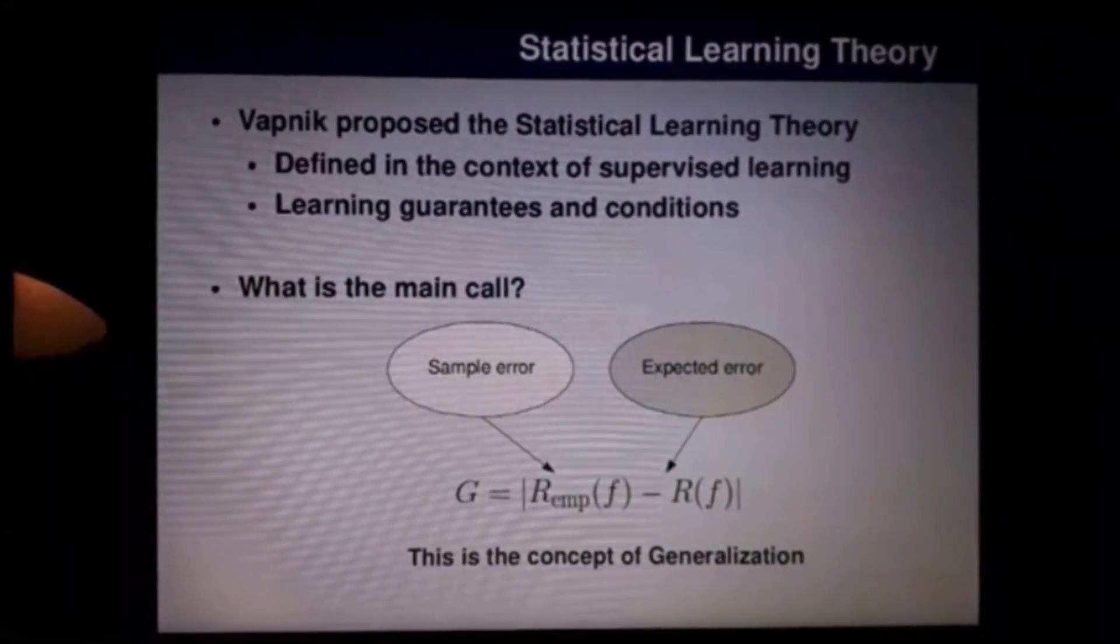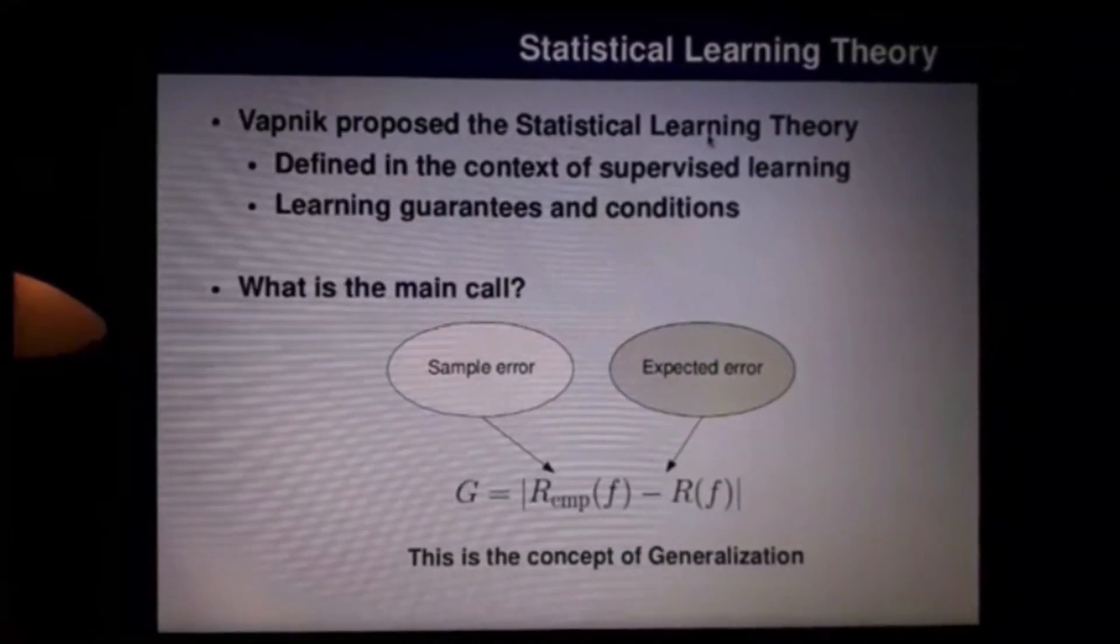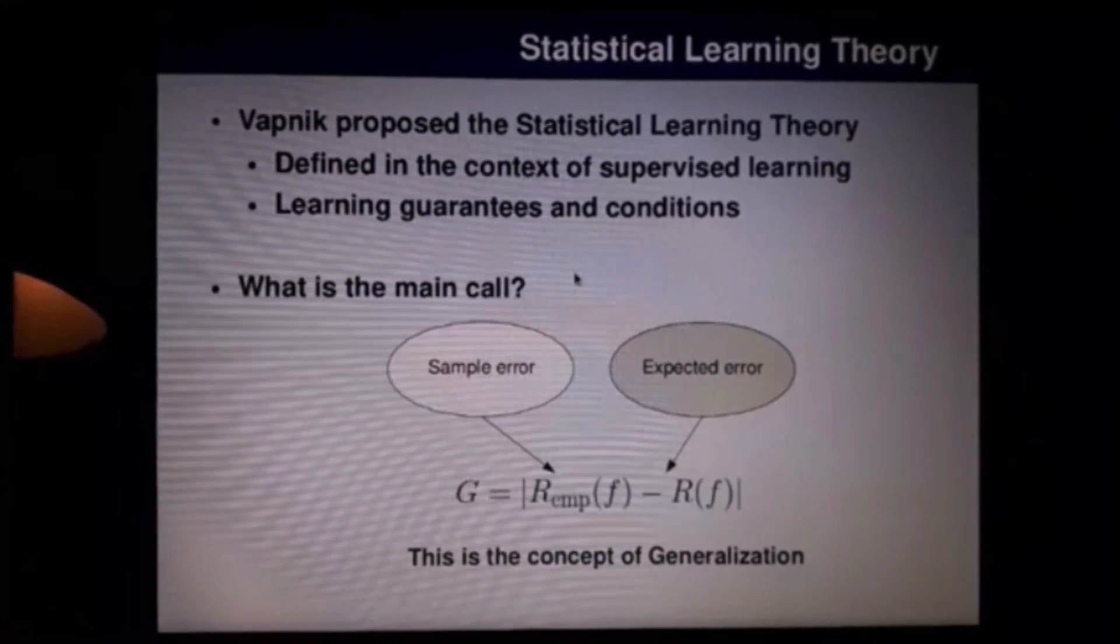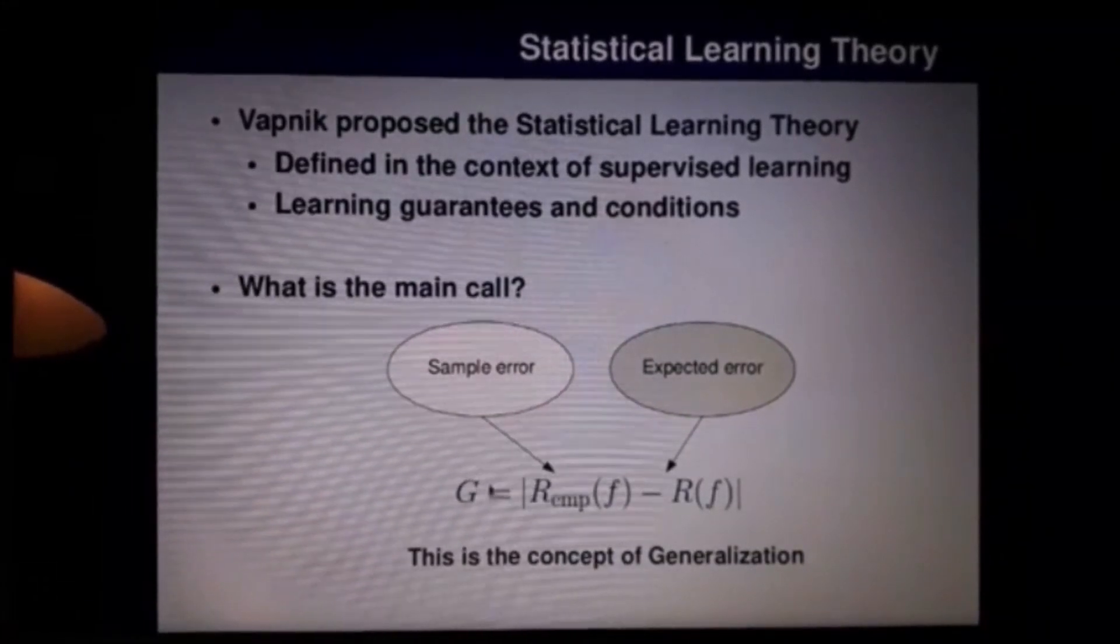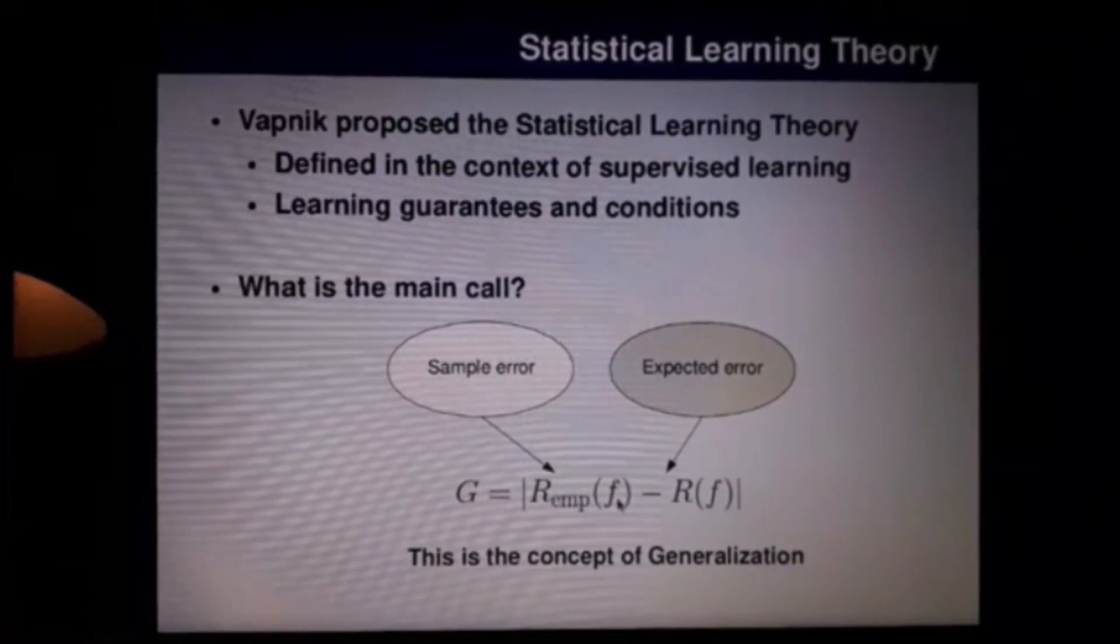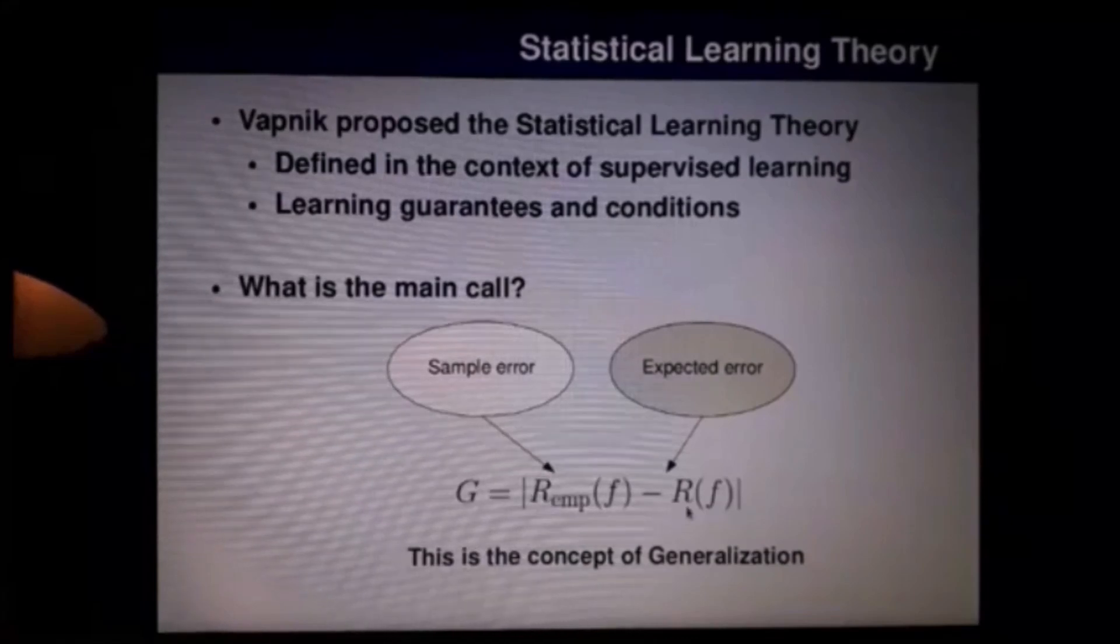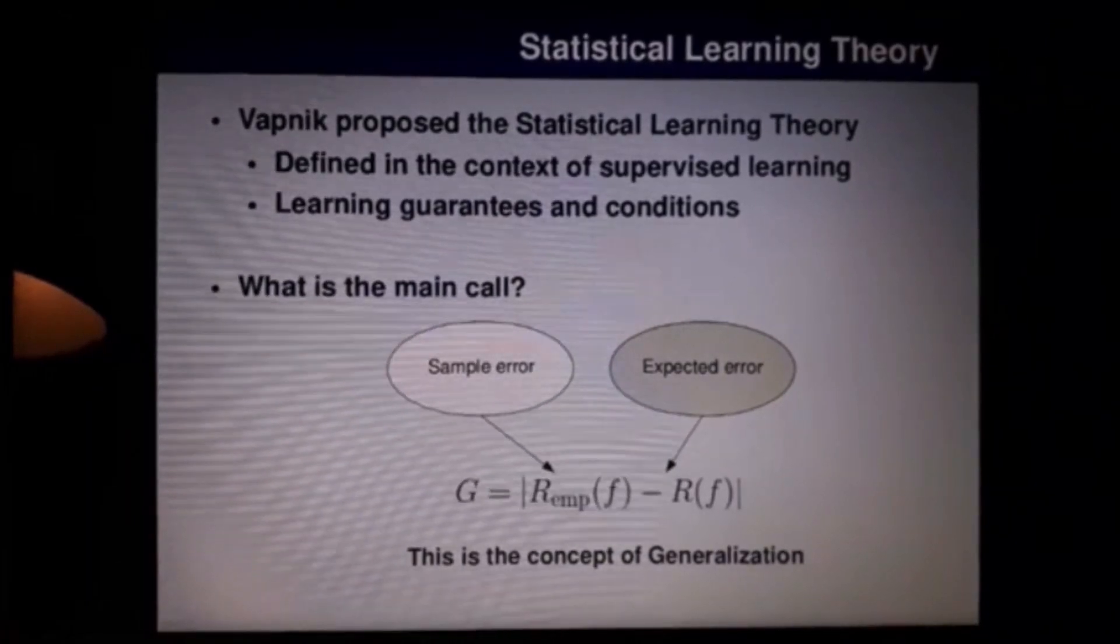So, to start, I'm gonna tell you a little about Vapnik. Vapnik is, in fact, this Russian guy who proposed the statistical learning theory. He defined the context of supervised learning, basically, and his definition comes from the generalization. So, for Vapnik, the generalization G is, in fact, the difference a classifier F has a test while being applied on a sample and while being applied on the real world.